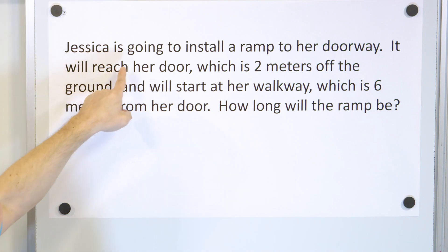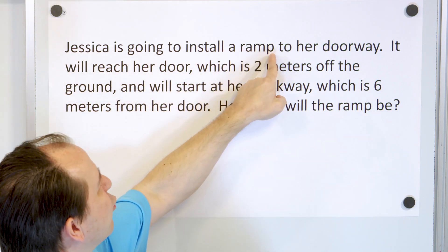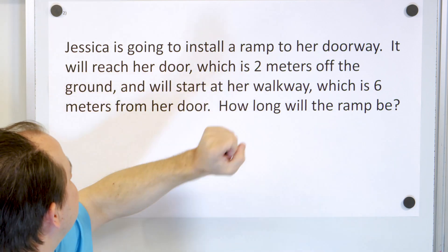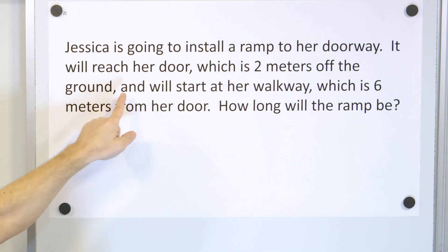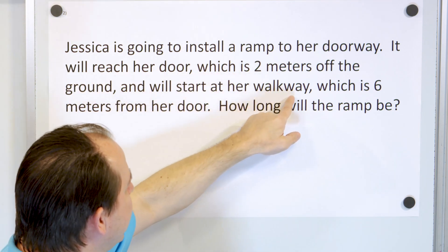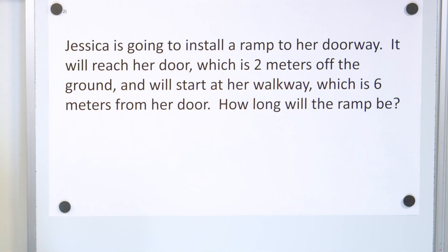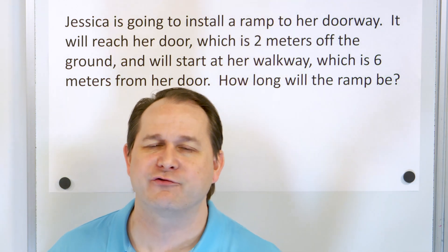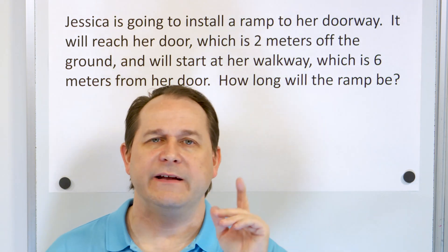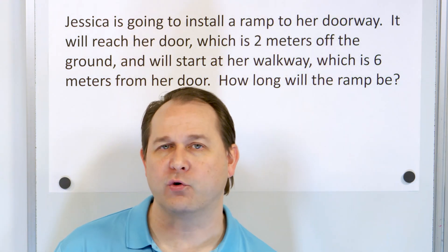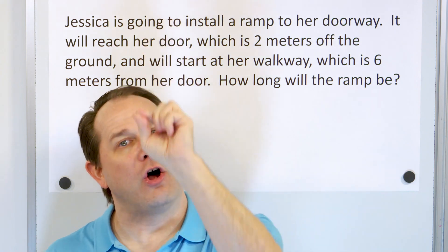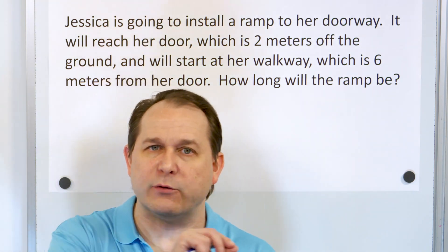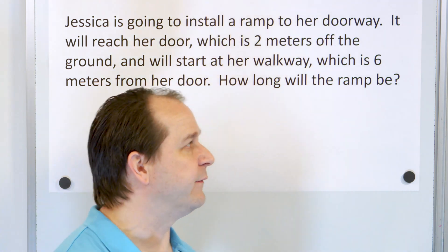Here's problem number two. Jessica is going to install a ramp to her doorway. It will reach her door, which is 2 meters off the ground, and will start at her walkway, which is 6 meters from her door. How long will the ramp be? It's a ramp, so it's going to form a right triangle. We're told how far away it is from the door and how tall the doorstep is, so we need a ramp that fits those dimensions.